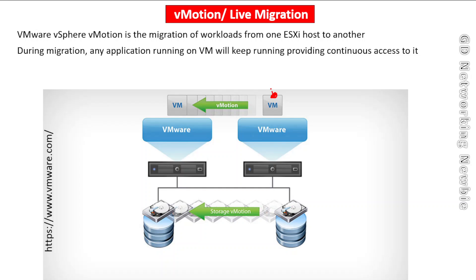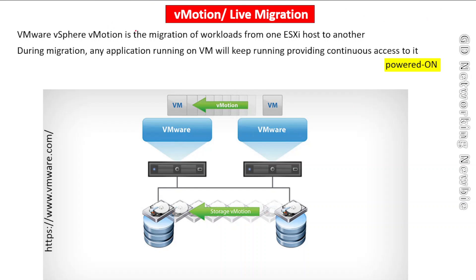The virtual machine is moved to another host without any disruption of services. This is in contrast to cold migration, where we power off the virtual machine and then move it. In vMotion, the virtual machine remains in the powered-on state — there is no need to power it off — meaning there is no downtime and users can continuously access the services hosted on that virtual machine.